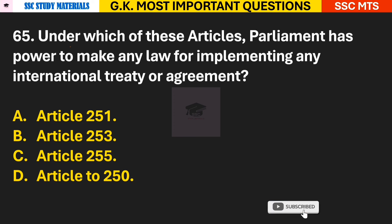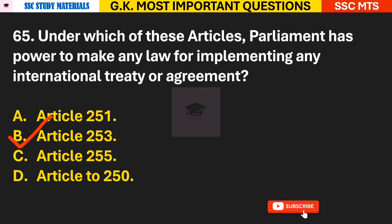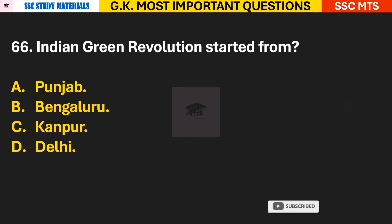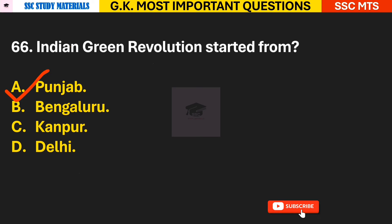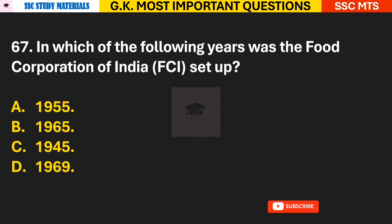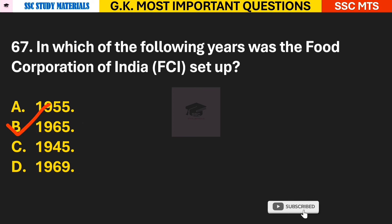Question 65: Under which article does Parliament have the power to make any law for implementing any international treaty or agreement? Answer B — Article 253. Question 66: The Indian Green Revolution started from which state? Answer A — the Indian Green Revolution started from Punjab.